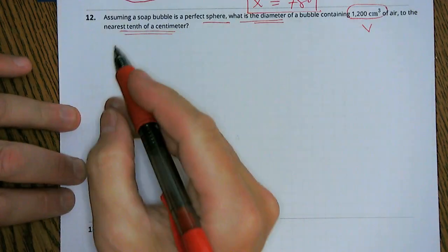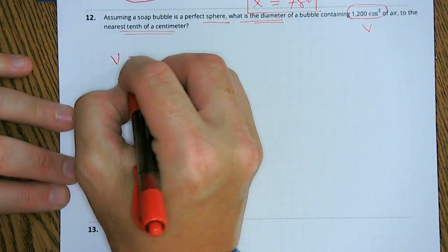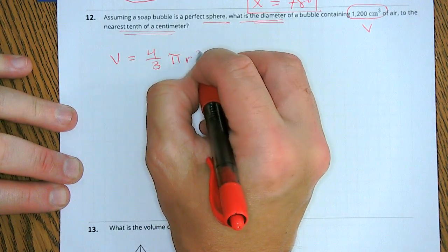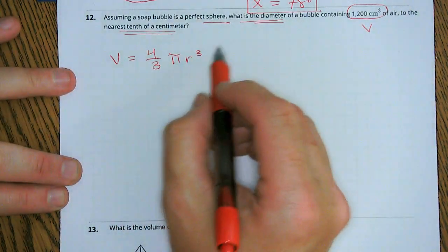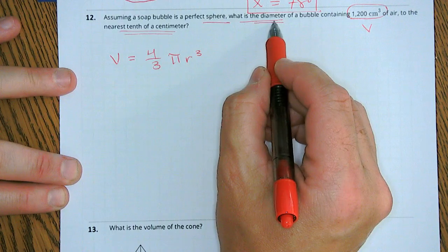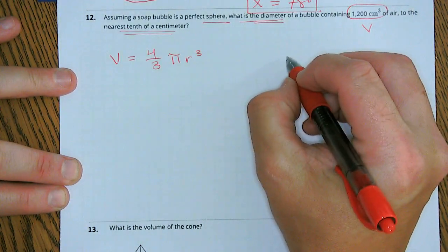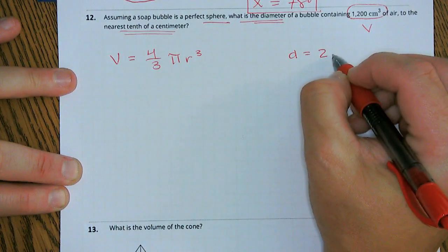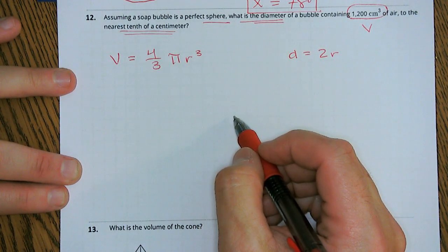So our volume is equal to four-thirds pi r cubed. Now it says what's the diameter? We know that the diameter is equal to twice the radius. So we have to figure out our radius here.